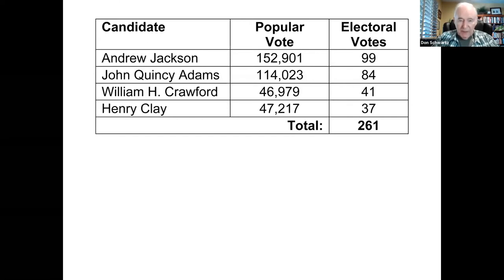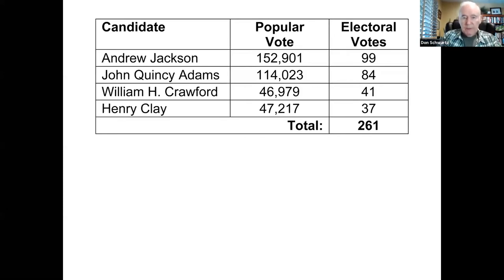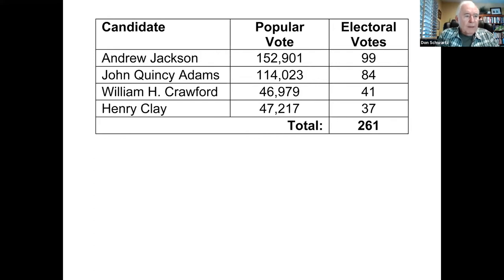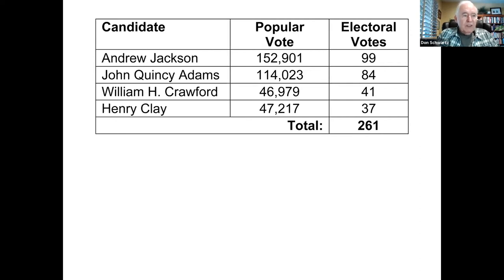In the House of Representatives, they had to choose among the top three candidates, which meant that Henry Clay was out. But Clay was a kingmaker, and he was determined to prevent Jackson from becoming president. When representatives vote in the House, they vote collectively by states. There were 24 states at the time, and the winning candidate would have to win a majority. On the first ballot, 13 states voted for Adams because Clay threw his support behind Adams. Jackson won seven states and Crawford won four. And so Adams became president.